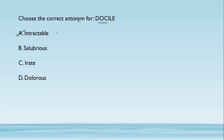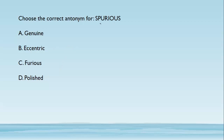'Salubrious' means healthy. 'Irate' means getting angry easily. 'Dolorous' is used for someone who is very sad and sorrowful. The correct answer for the antonym of docile is 'intractable.' Let's move forward.